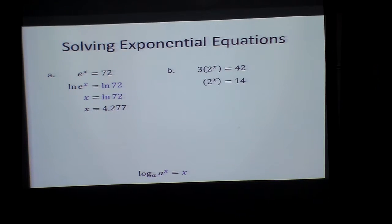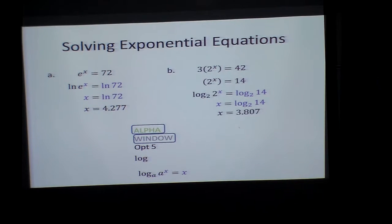Or, let's look at this one. I divided each side by 3, so 42 divided by 3 is 14. Now I'm going to take a log of base 2 to get the x out of the exponent. I can go to my alpha window option 5 and put base 2 log 14 and get 3.807.